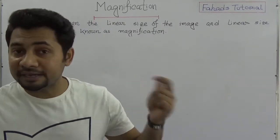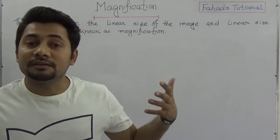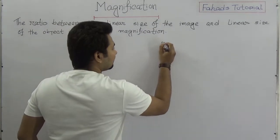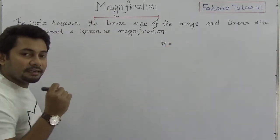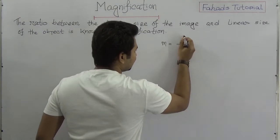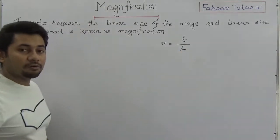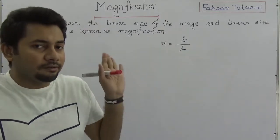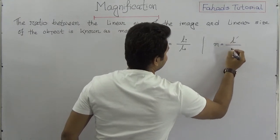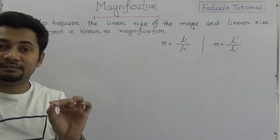It is very interesting to know how to use the magnitude of magnification when solving mathematical problems in this chapter. We say magnification M is the ratio of the length of image (I) to the length of object (O), which can also be written as L prime by L.